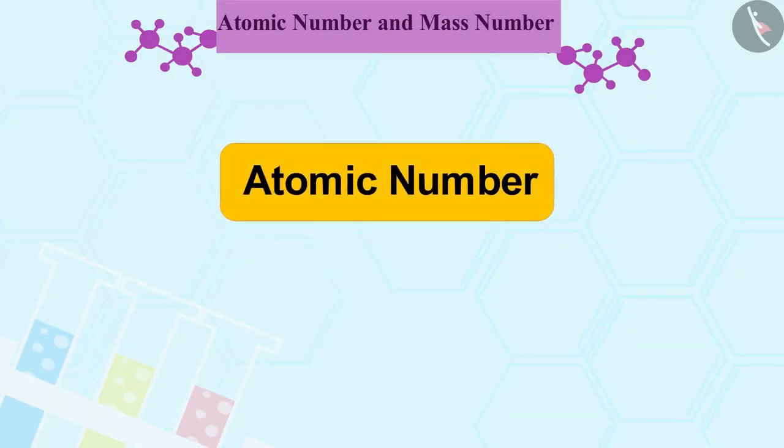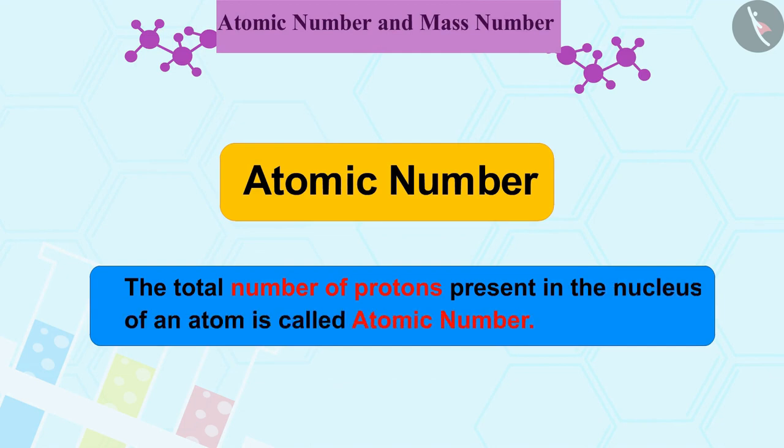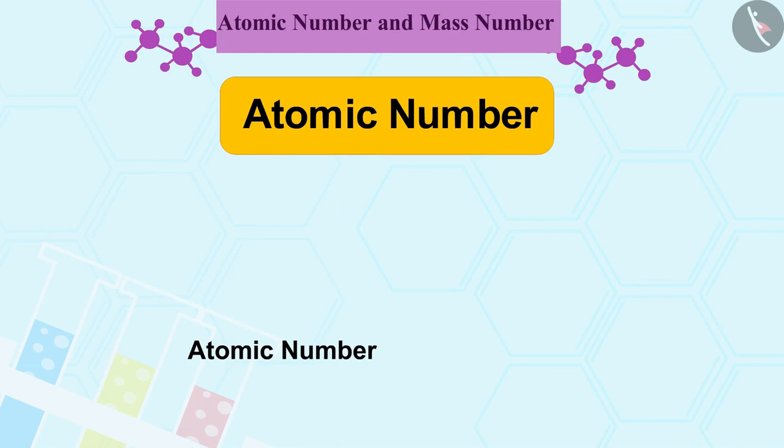Let us first learn about Atomic Number. The total number of protons present in the nucleus of an atom is called Atomic Number. It is denoted by Z. All atoms of an element have the same atomic number Z.